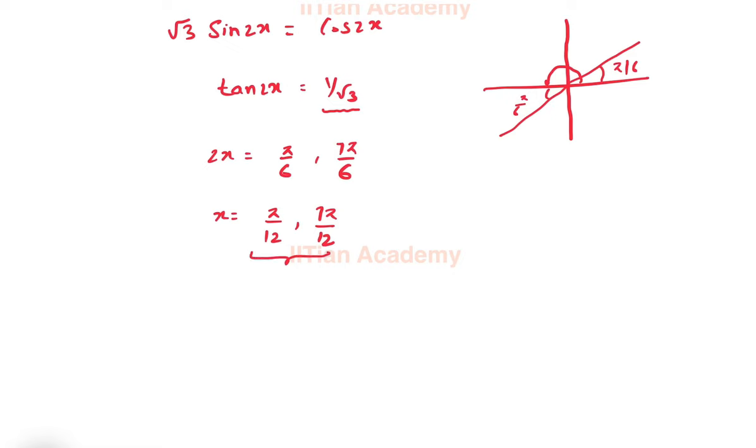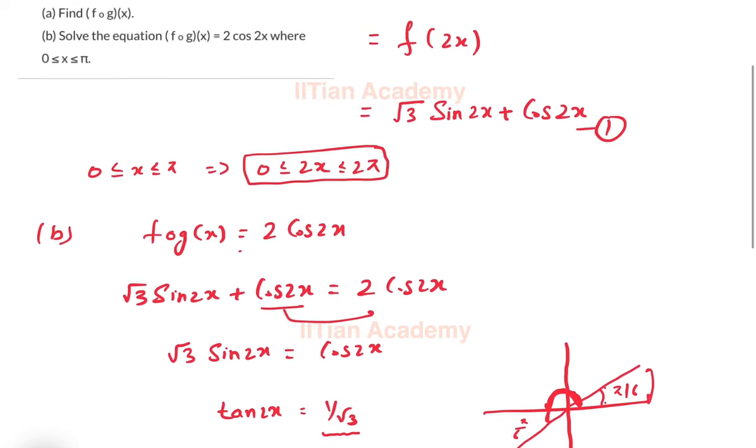Now we have to check whether these values are between 0 to π. So π/12 will be half of this, which will be between 0 and π, and 7π/12 will be half of this angle, which will again be between 0 to π. So both of these values are between 0 to π. Hence these are our solutions.